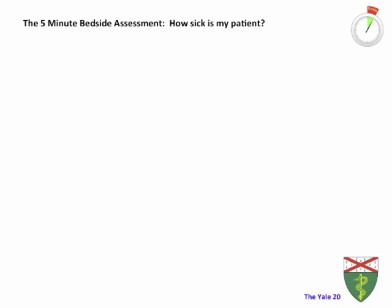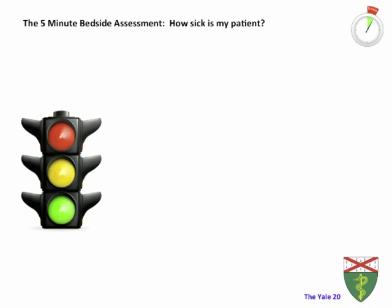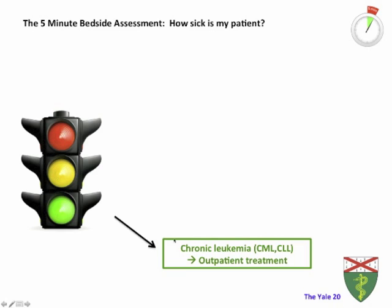The five-minute bedside assessment should help you assess how sick your patient is — does this patient need to see a hematologist now, overnight, or can it wait until tomorrow? As always in the Yale 20, we think of triaging using a traffic light. Starting with the green light: patients with chronic leukemia — either CML or CLL. Most of those patients get all their chemotherapy as outpatients and their reason for admission might be related to the leukemia, but often is completely unrelated. As long as there's no transformation to acute leukemia, those patients can wait to be seen by a hematologist the next morning.